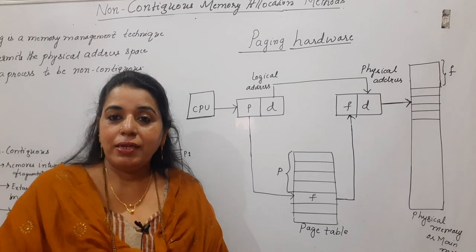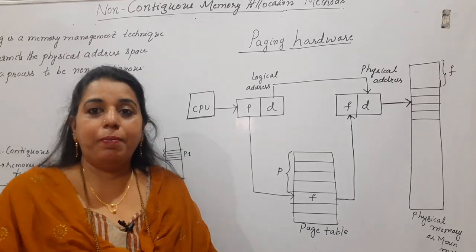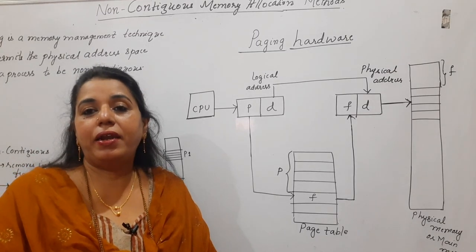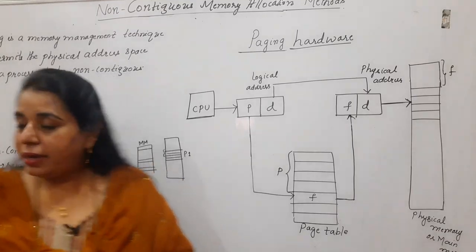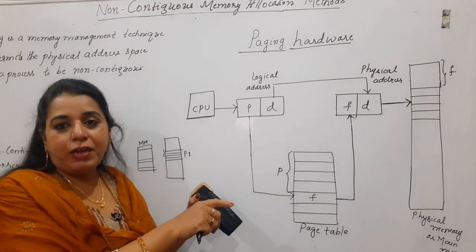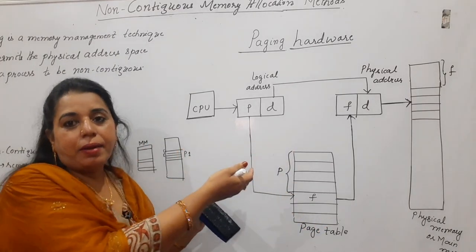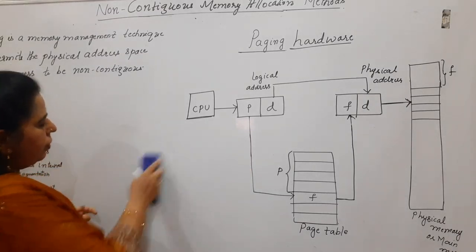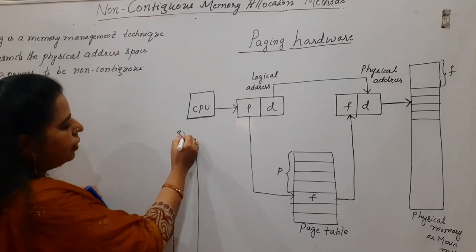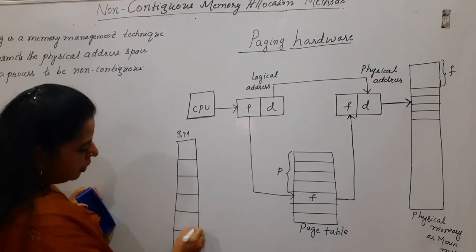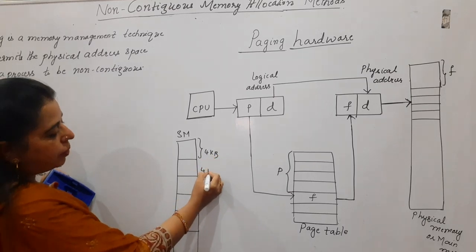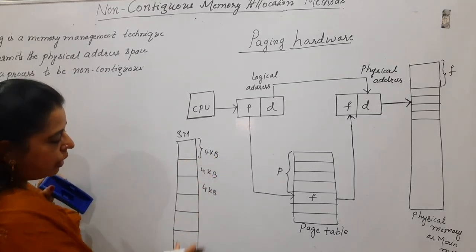For this to be carried out, there is one thing that must be done: the memory — whether secondary or main memory — first has to be divided into equal-size partitions. So, if this is your secondary memory, divide it into equal partitions — all partitions should be of equal size. Suppose this is 4KB, then this will also be 4KB, and this will also be 4KB. Like this, you divide into equal sizes.